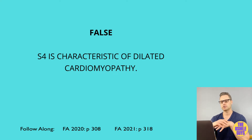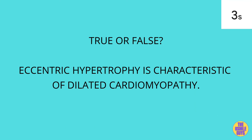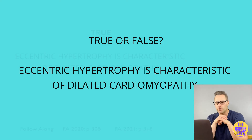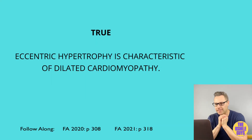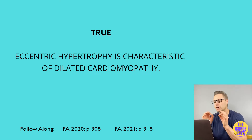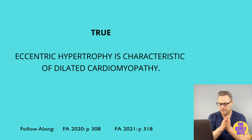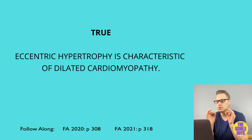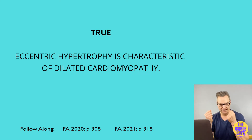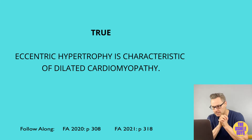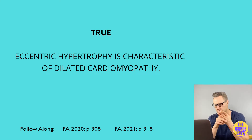One more true-false question. True or false, go. This is true. Remember, dilated cardiomyopathy displays eccentric hypertrophy, meaning the sarcomeres are added in series, while HOCM is characterized by ventricular concentric hypertrophy, meaning the sarcomeres are added in parallel. We also need to mention the restrictive and infiltrative cardiomyopathies. These lead to diastolic dysfunction, just like HOCM. Something causes the heart tissues to become stiff and restrictive, and the most common causes include Loeffler endocarditis, post-radiation fibrosis, endocardial fibroelastosis, sarcoidosis, hemochromatosis, and amyloidosis.